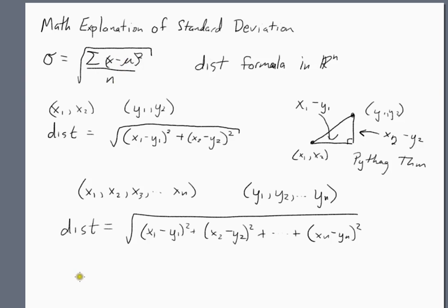Our first x minus the mean squared, our second x minus the mean squared, our third x, fourth x, however many x's we have, and then our last x minus the mean squared.